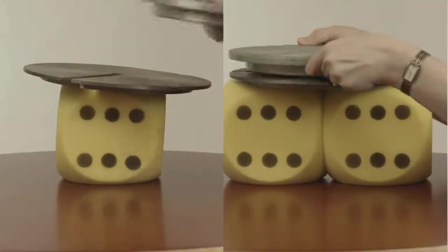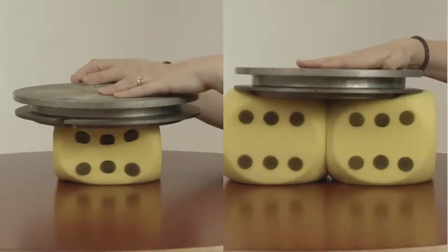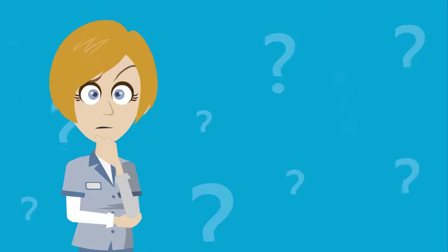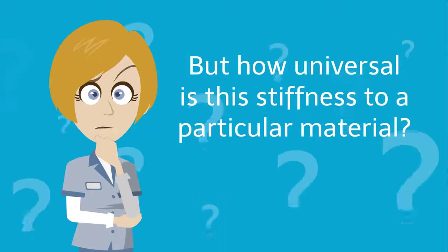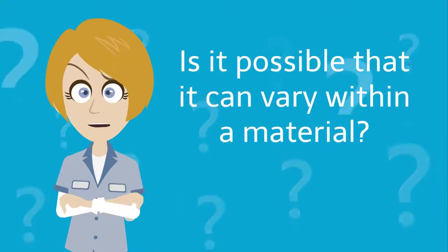We have already seen that materials will deform under load, and that this deformation can be related to a material property known as stiffness. But how universal is the stiffness to a particular material? Is it possible that it can vary within a material or along different directions within a material?